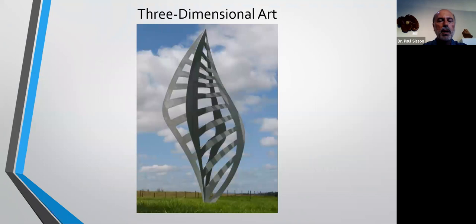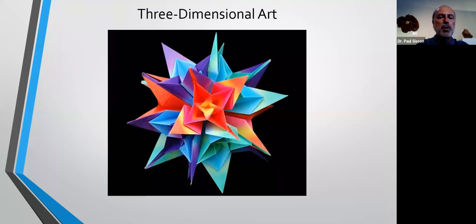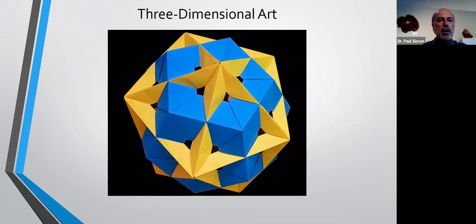Moving on to three-dimensional art: this is a piece called 'Mistral Number One' by Pete Morhaus, a nice mathematically inspired sculpture. This example of knot theory made tangible is by Rinus Roelofs. Here's an example of mathematically inspired origami — it's interesting that mathematics inspires some really beautiful origami, and conversely origami can be used to demonstrate some really nice intuitive informal mathematical proofs. Origami is also a great teaching tool, a great way to introduce mathematical concepts to kids, and there are a number of good books and websites on that.